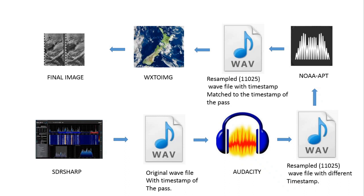In this method we would be recording an audio file in wave format of the actual pass. This audio file will have the timestamp of the pass. The WX2IMG software requires a sampling rate of 11025, and so we would be resampling this original wave file in Audacity software with a sampling rate of 11025. The output of the Audacity software will be a resampled wave file with sampling rate of 11025, but it will have a different timestamp.